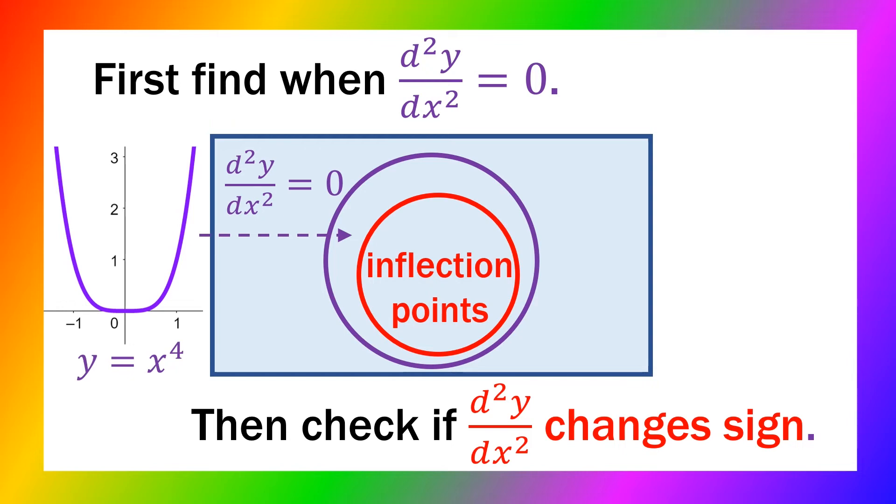For example, the graph of x to the power of four has second derivative of zero at the origin. But it does not have a point of inflection because the graph is always concave up.